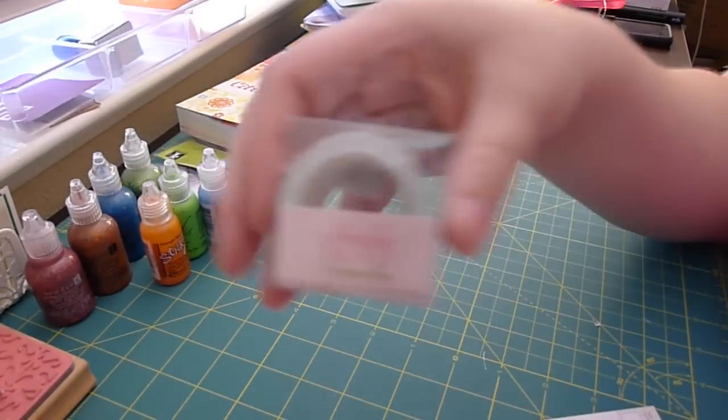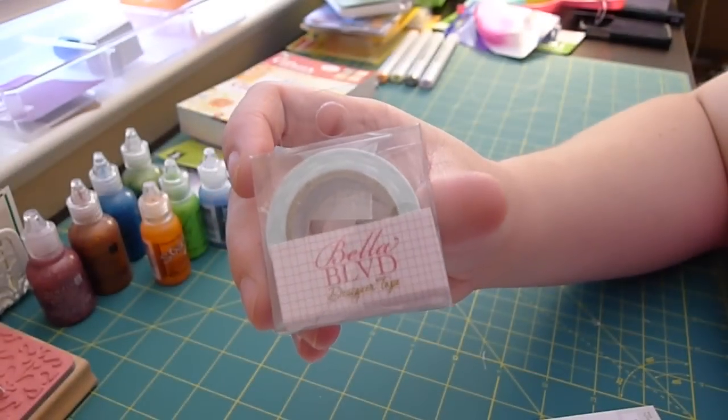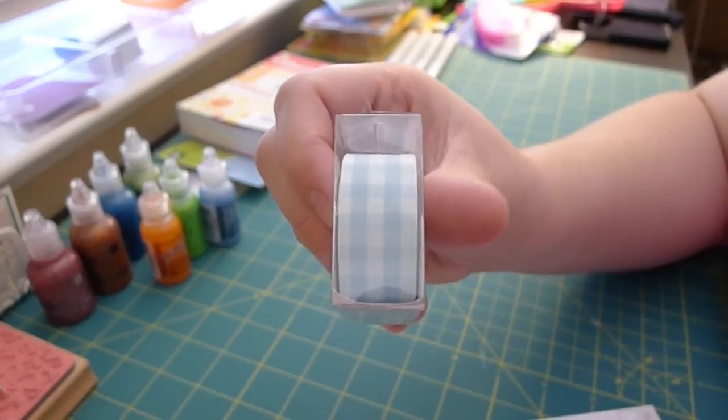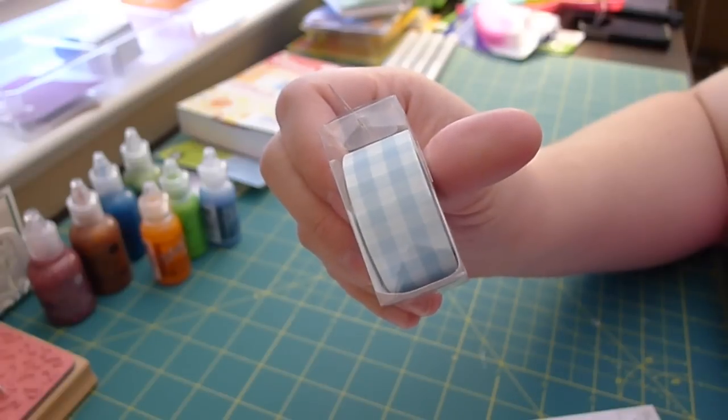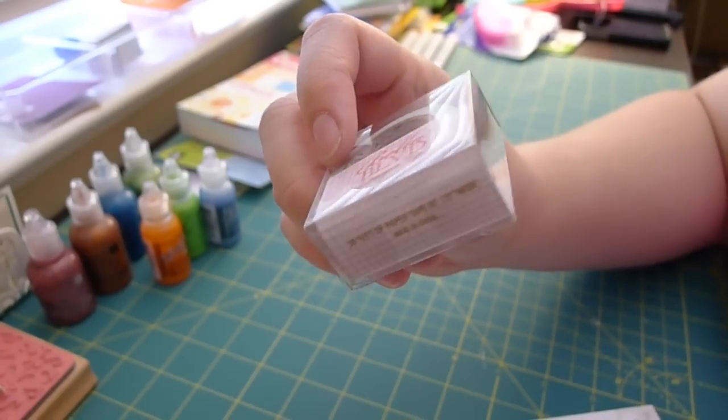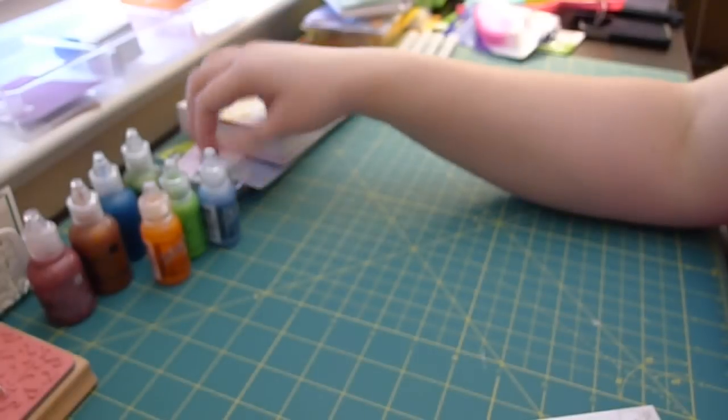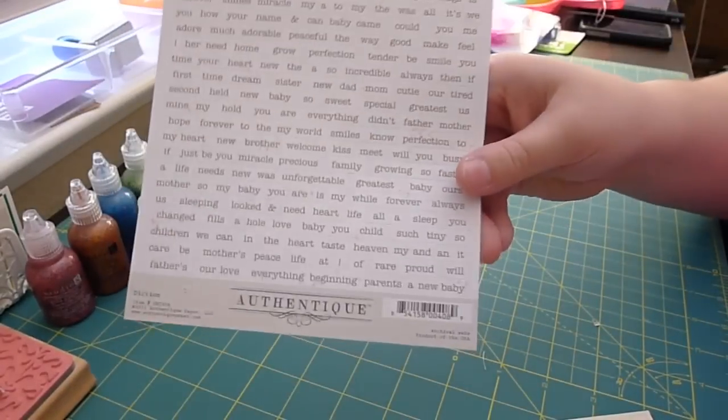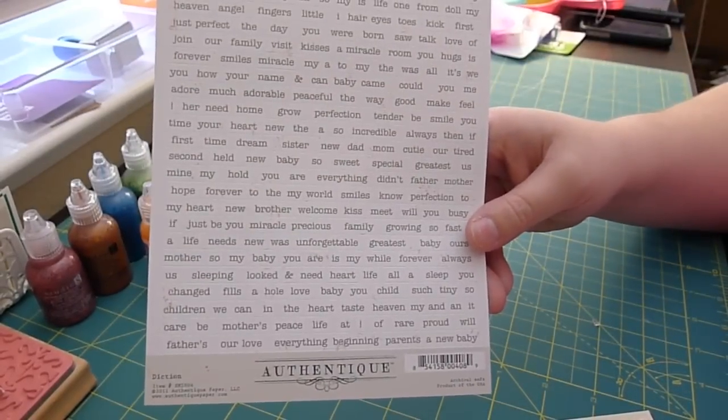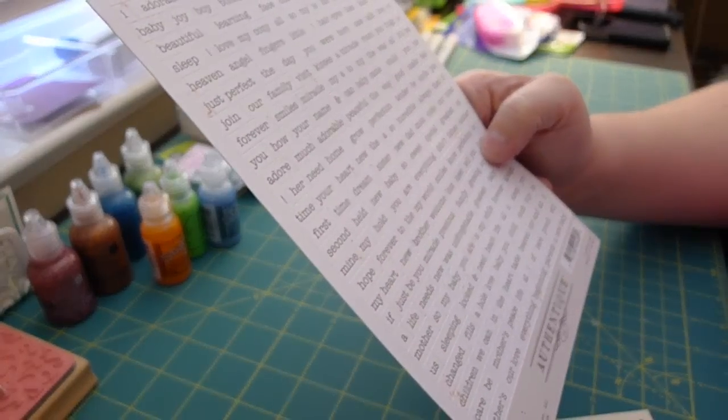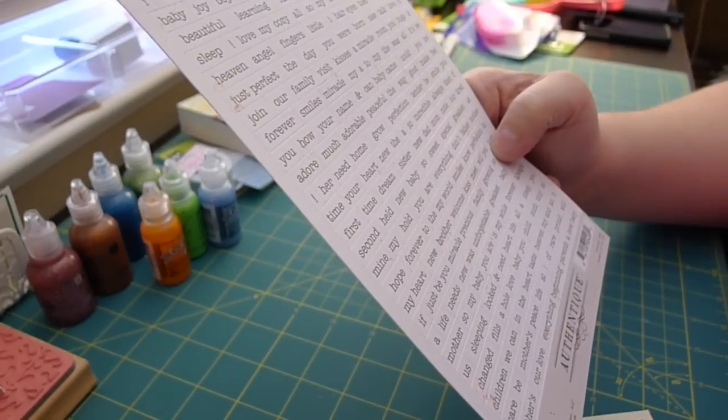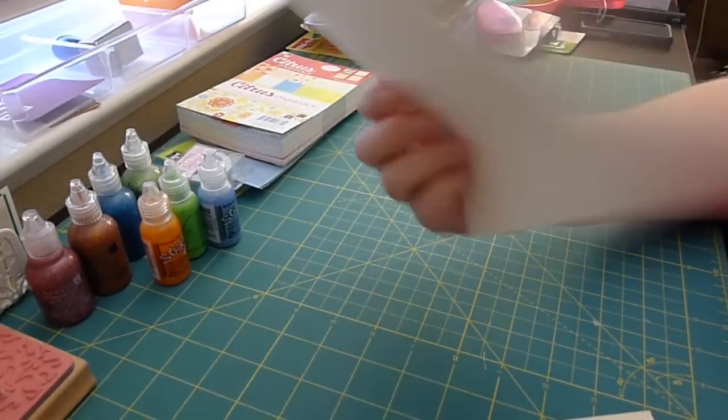And then I got some Bella Boulevard Washi. It's a Blue Gingham. I'm not in love with it, but I don't have anything like that, so I figured I might be able to use it. And I got this Authentique. It's from the, I guess, Diction? Maybe that's what that is.